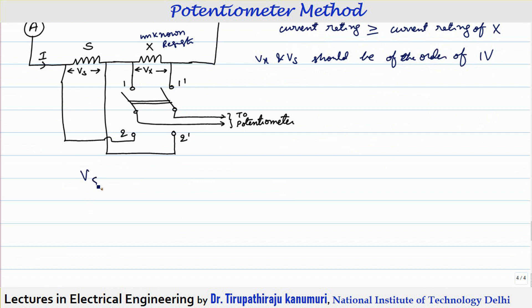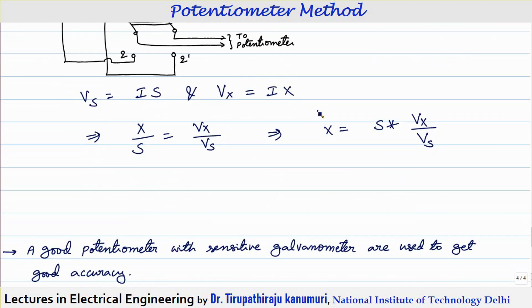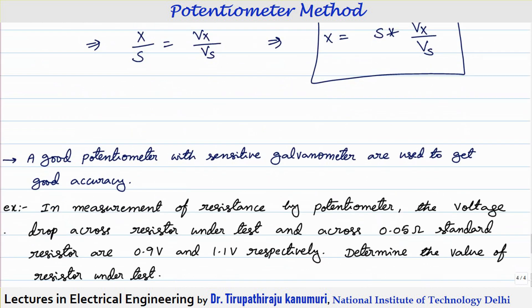The voltage drop across the standard resistor is Vs = I × S, and the voltage drop across the unknown resistor is Vx = I × X. From this, the ratio X/S = Vx/Vs, so X = S × (Vx/Vs). Here Vx is the voltage measured by the potentiometer across the unknown resistor and Vs is the voltage across the standard resistor. A sensitive galvanometer is used to achieve high accuracy.